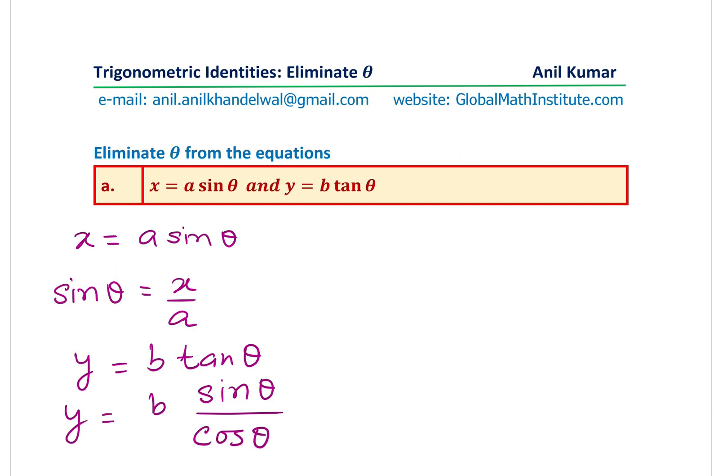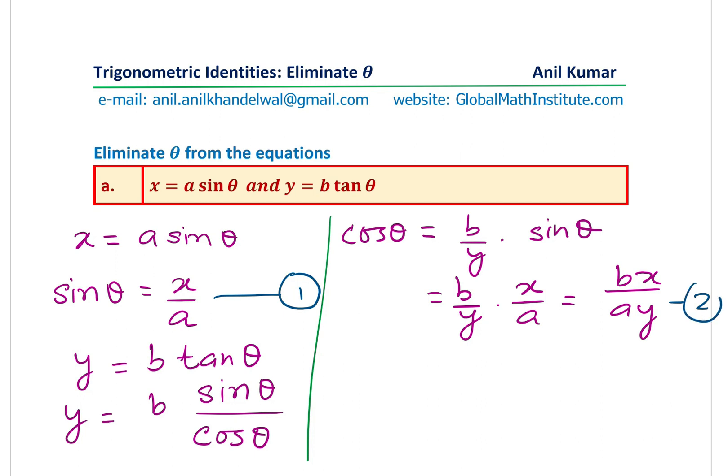Now from here, we can write what is cos theta. We have to get what is sine theta and what is cos theta. So from here, we can write cos theta is equal to b over y times sine theta. Now, sine theta value is known to us. We are saying sine theta is x over a. So I could substitute that in here. I get cos theta as equals to b over y times x over a, or you could write this as bx over ay. So that is cosine theta.